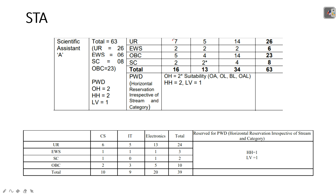For STA: CS has 16 vacancies, IT has 13 vacancies, and Electronics has 34 vacancies. SC candidates from IT stream have 2 reserved posts and can apply there. Earlier the vacancies were CS 10, IT 9, and Electronics 20, totalling 39. Now it is 63 vacancies total. This is the branch-wise distribution of vacancies.